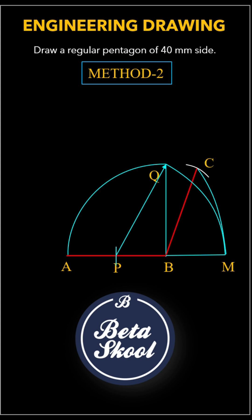Draw an arc from point A with radius AB, and another from point B with radius AM. Let the arcs intersect at point E. Join AE.